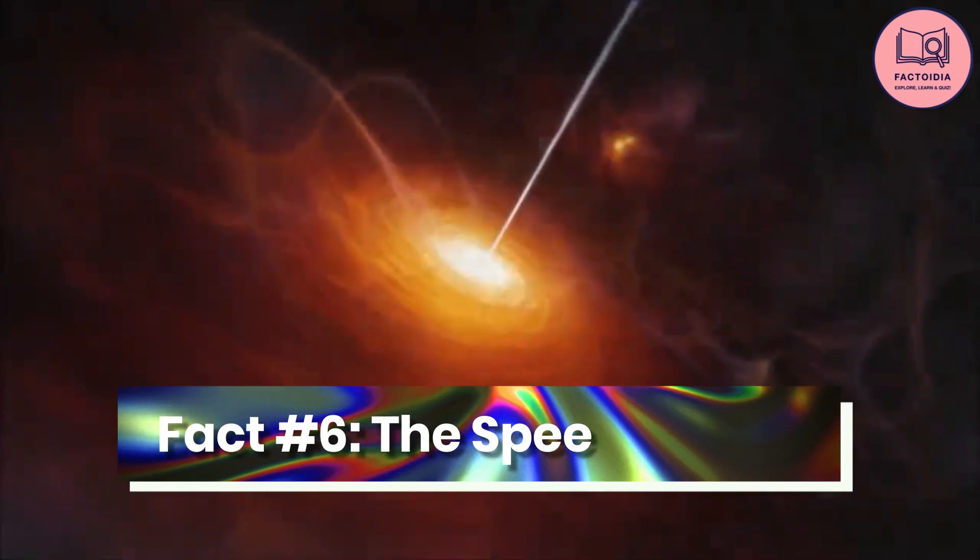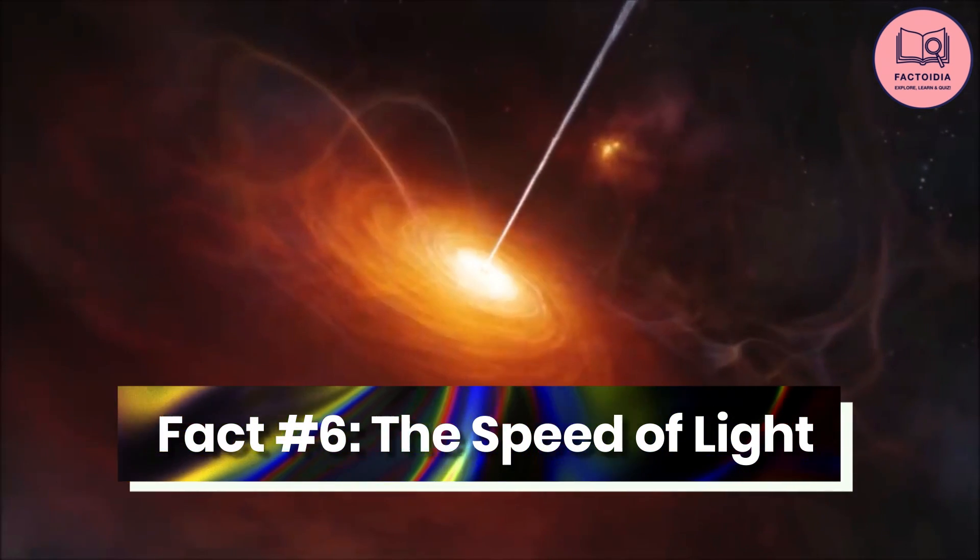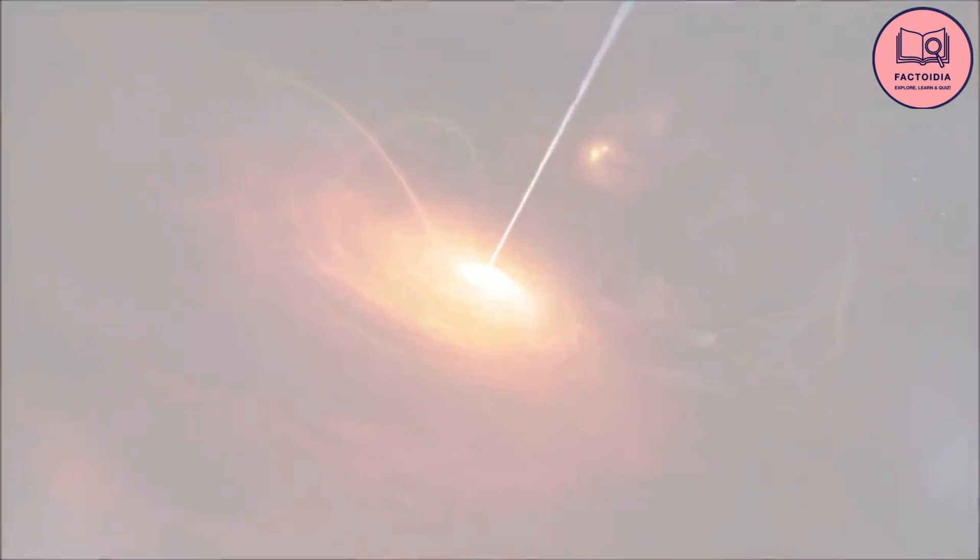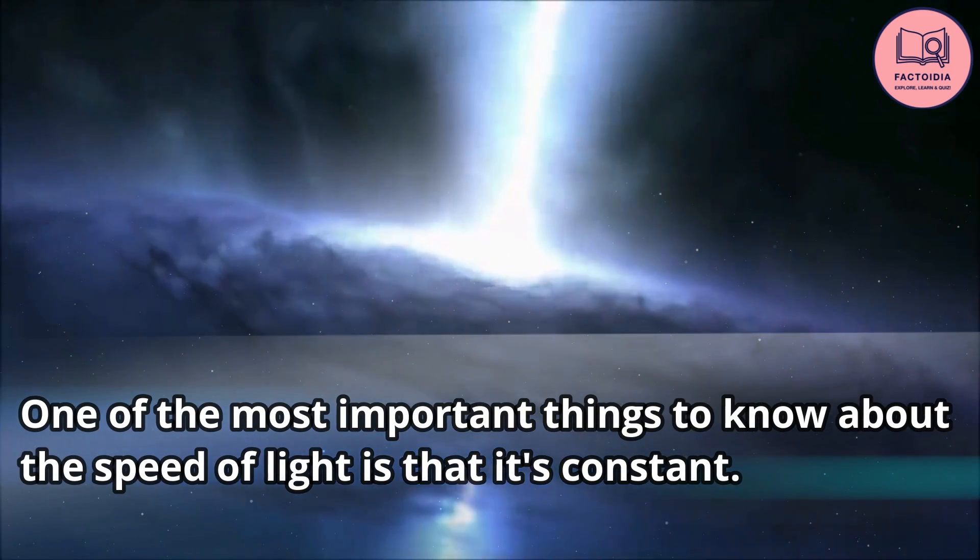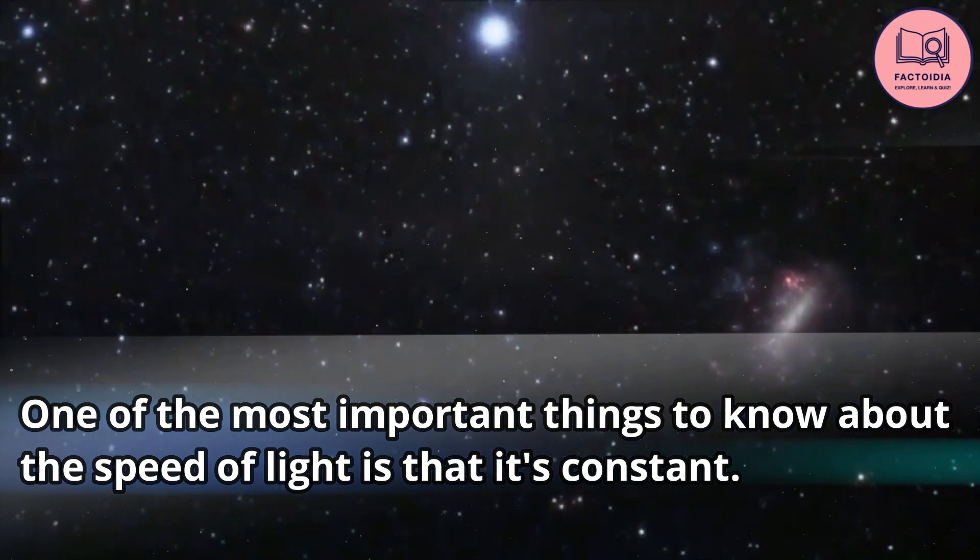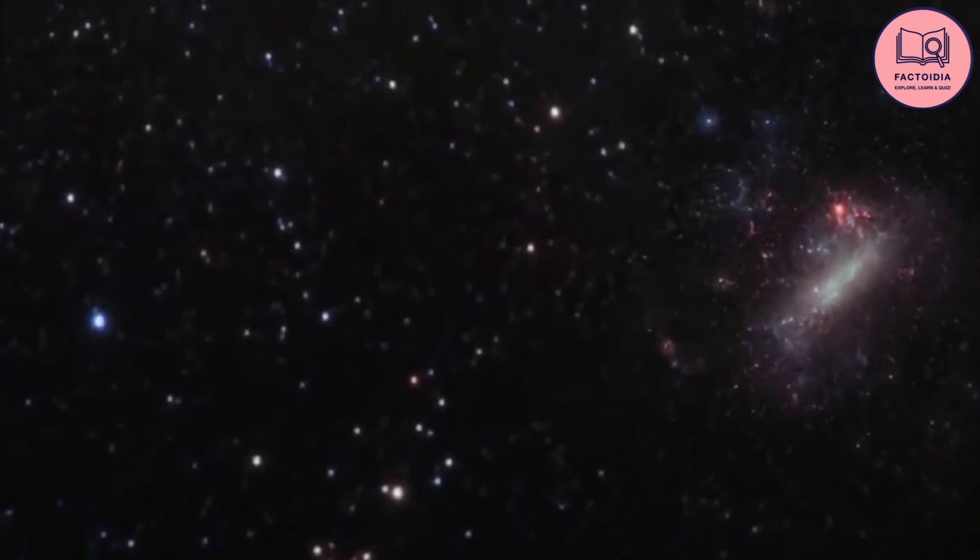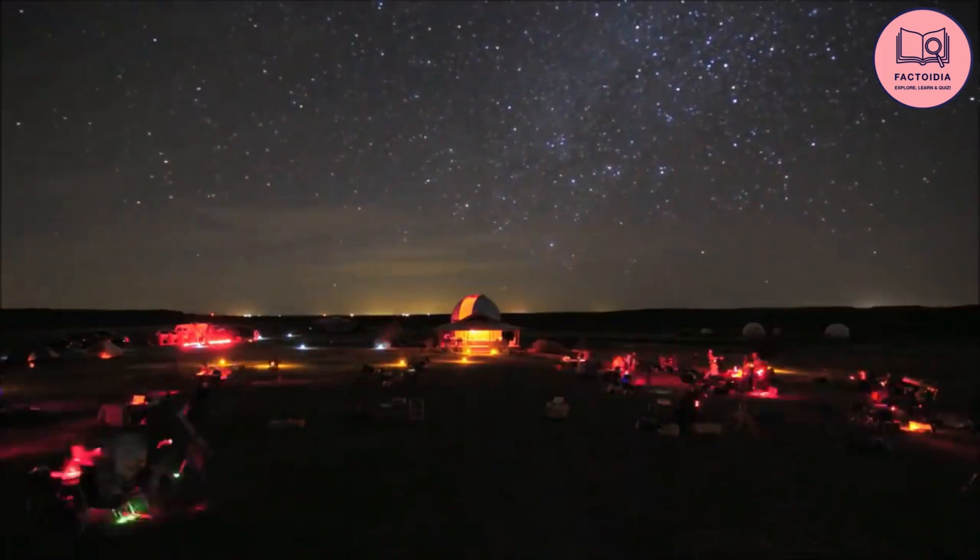Fact number 6, the speed of light. The speed of light is a fundamental property of the universe, and it plays a crucial role in many of the phenomena we observe. One of the most important things to know about the speed of light is that it's constant. This means that no matter how fast you are moving, the speed of light will always appear to be the same. This is a key principle of the theory of relativity, and it has been confirmed by numerous experiments.